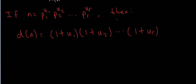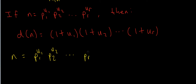In this video I want to prove why this formula is true. So let's take again a prime factorisation for n: n equals p1^u1 times p2^u2 all the way up to pr^ur, and I want to find out why d(n) has this value.